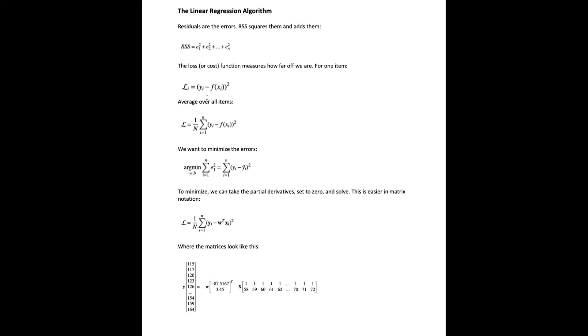Then we write a loss or cost function to measure how far off we are. So for one observation, our loss function for that one observation is the difference between its true y value and what the model would have predicted, squared.